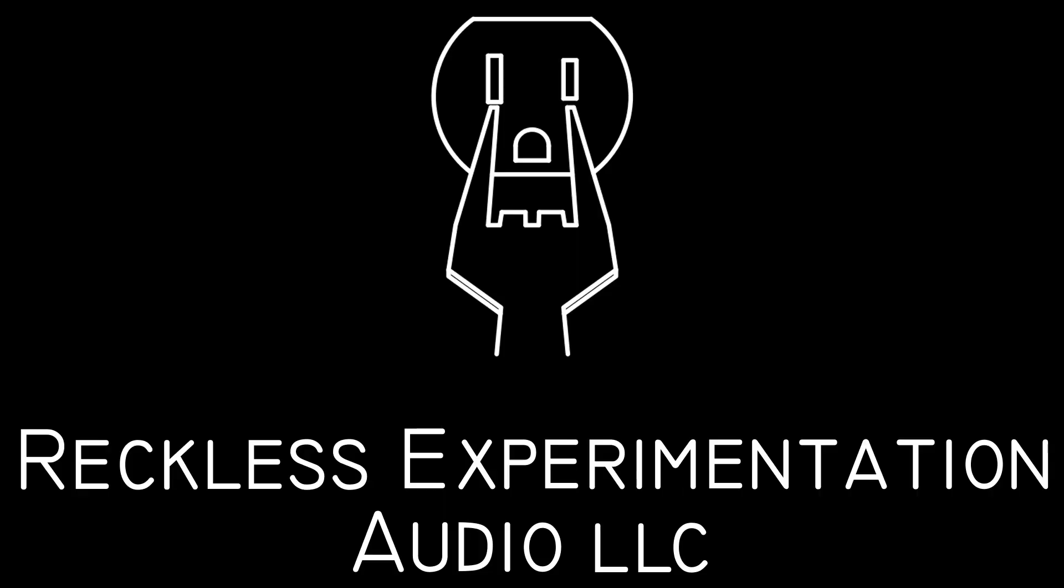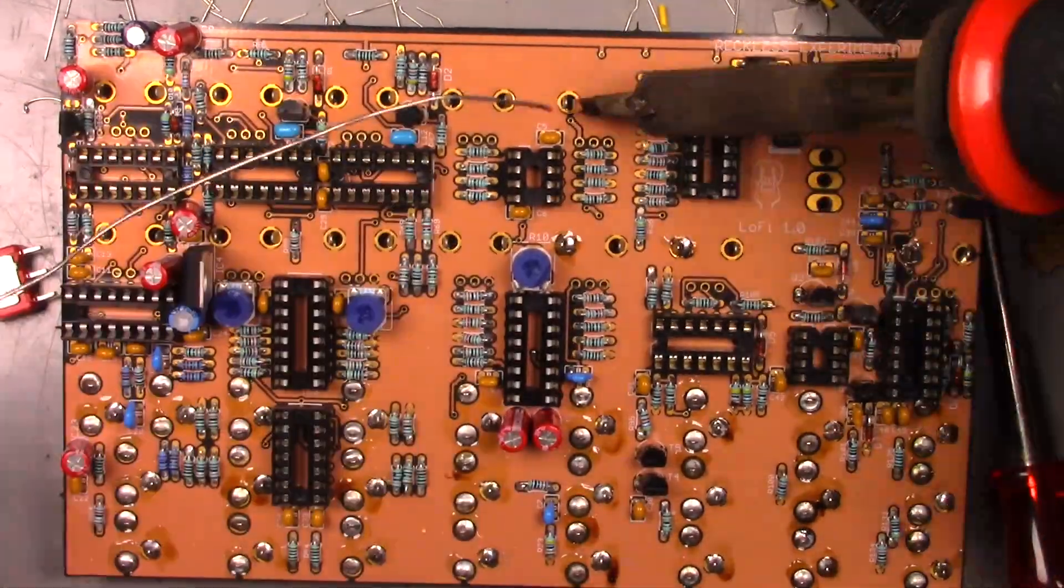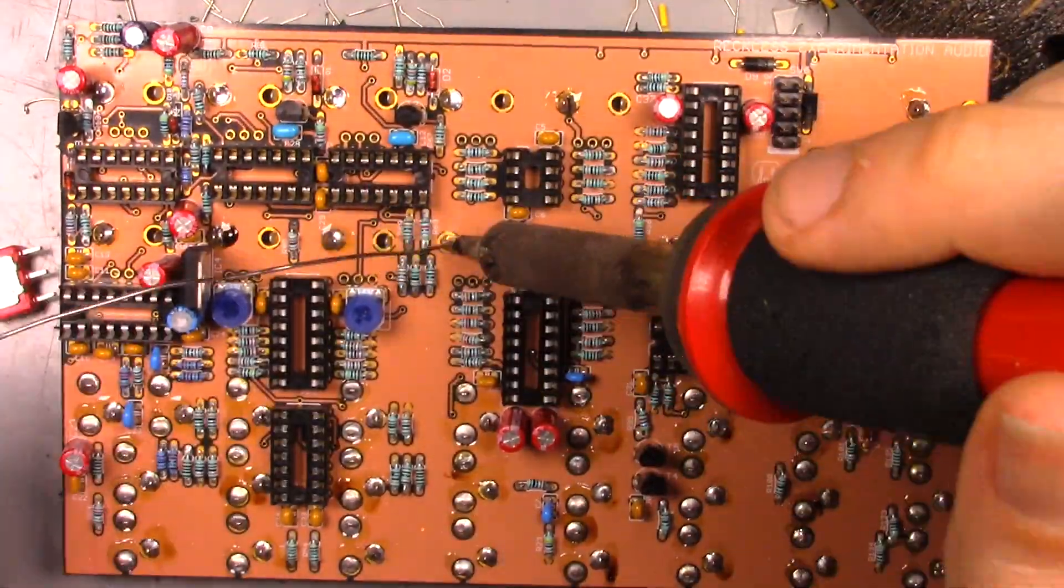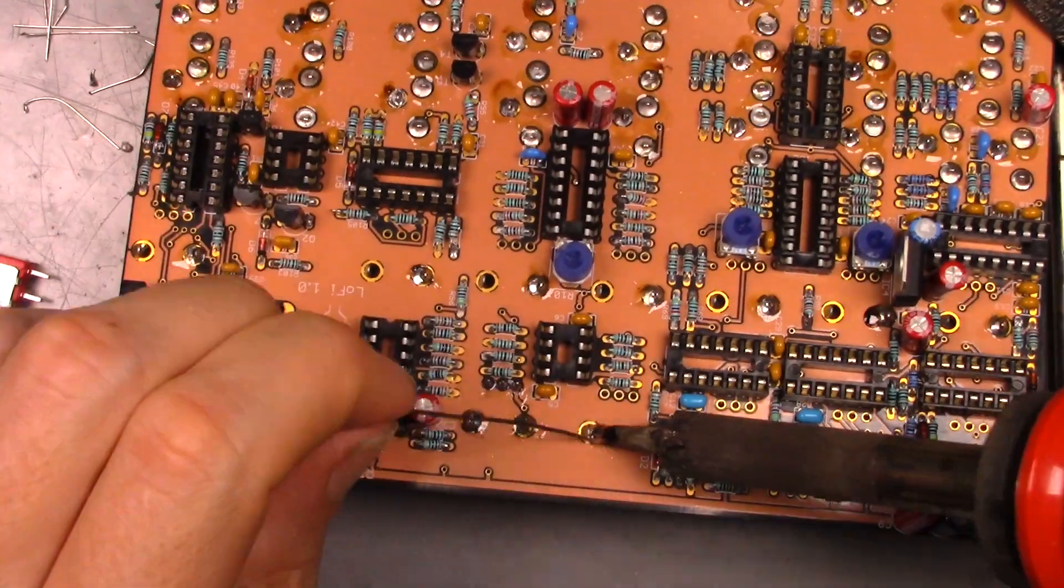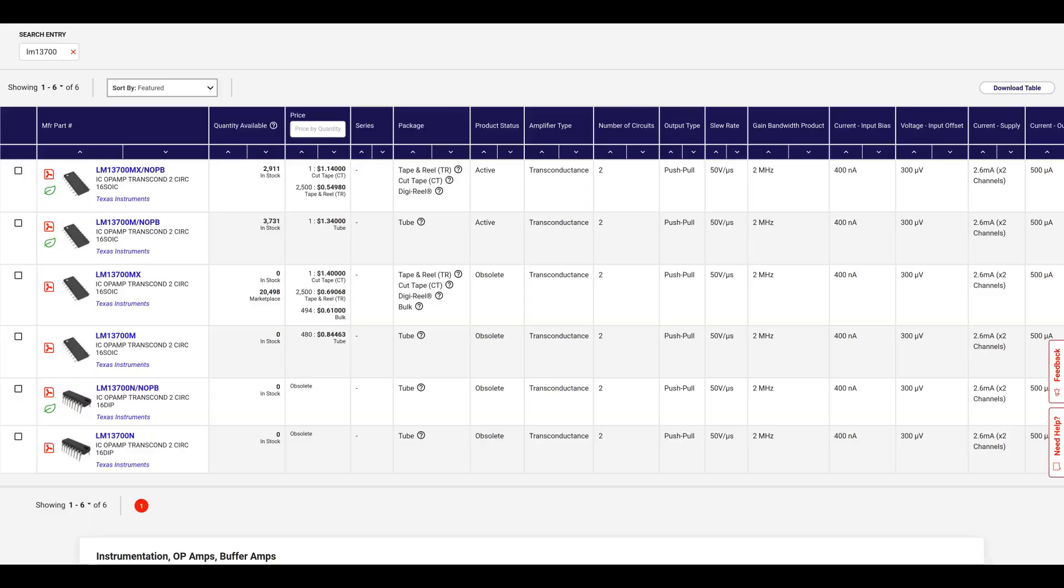Everyone's favorite, Surface Mount. As much as I want to keep using through-hole parts for new designs, more and more parts are only available in a surface mount package. Look at the LM13700 Transconductance amplifier for instance, a very common part in synthesizers. All through-hole versions on Digikey are unavailable, so it's SMT or nothing.